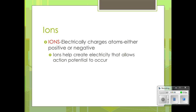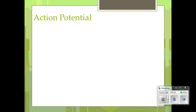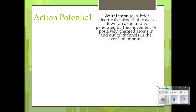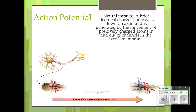When the switching of ions starts taking place within the neuron, charges are going to start to spread, and action potential starts occurring. Action potential is a brief electric charge that travels down the axon and is generated by movement of positively charged atoms in and out of the channels in the axon membrane.